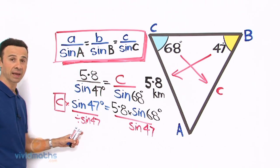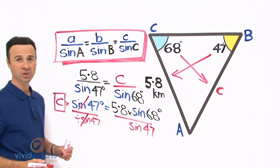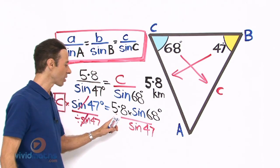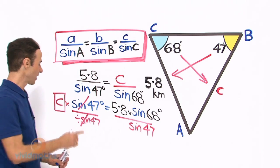Therefore this part here cancels - sine 47 divided by sine 47 is 1. So then we are left with c equals 5.8 times sine 68 over sine 47.